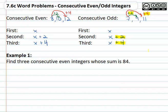A common error students will say plus 1, plus 3 because they're trying to add odd numbers. When we say consecutive odd, we're talking about the answer. When we say x plus 2, we're talking about the space.